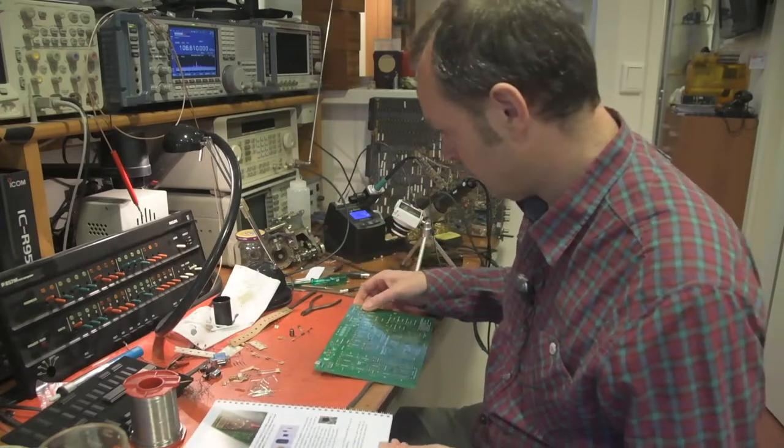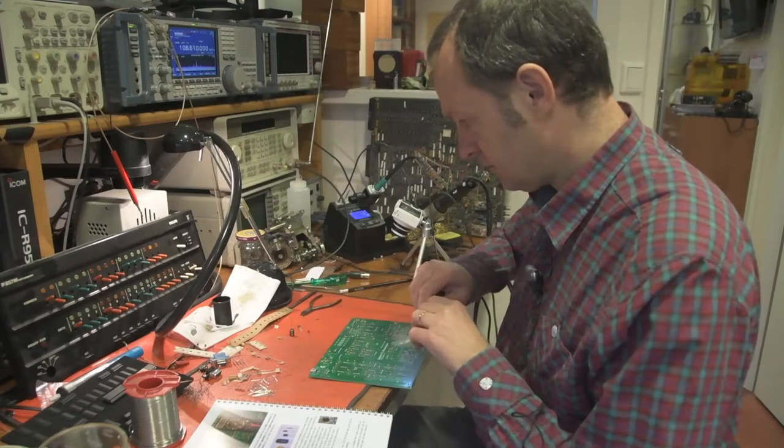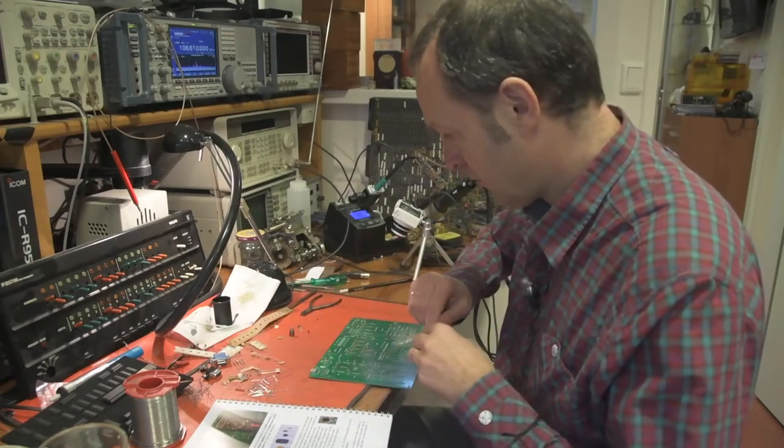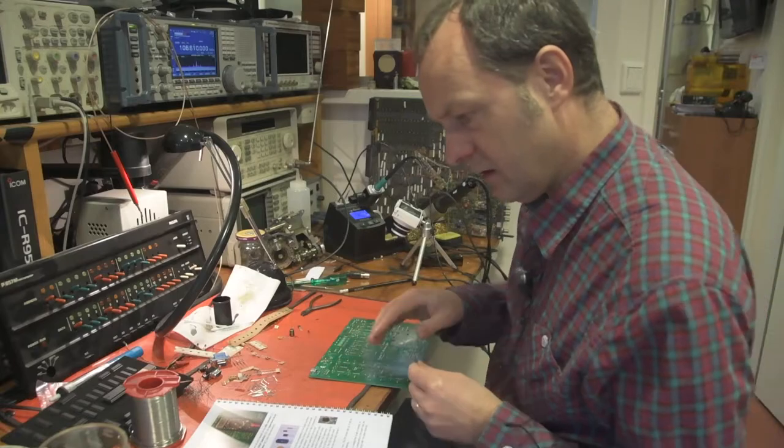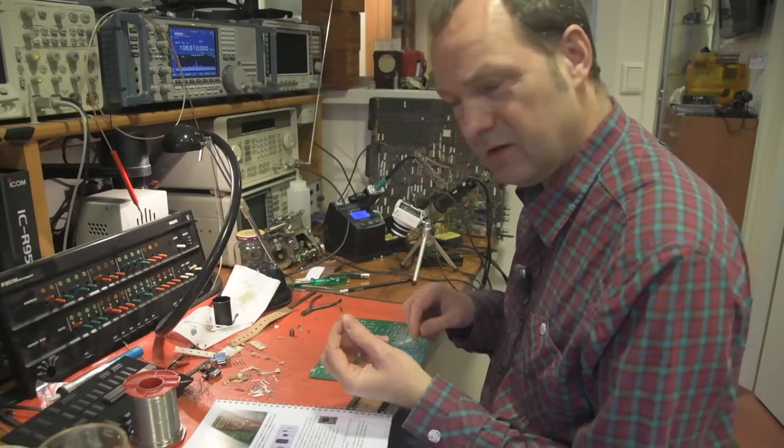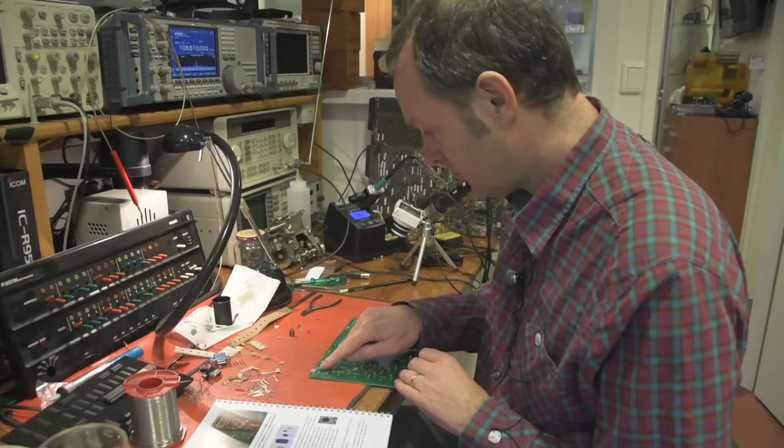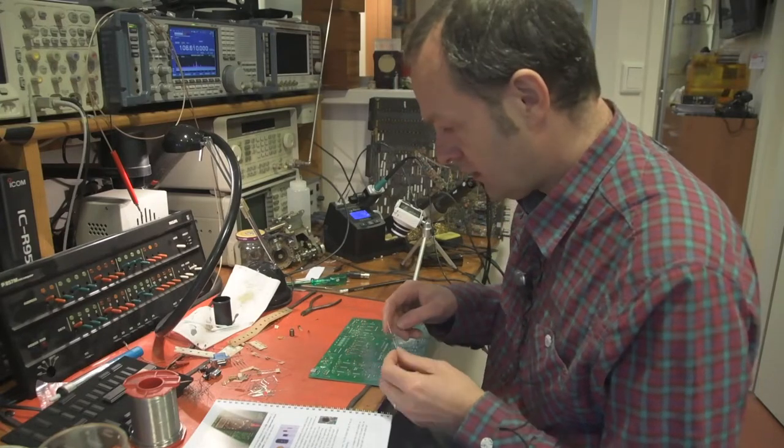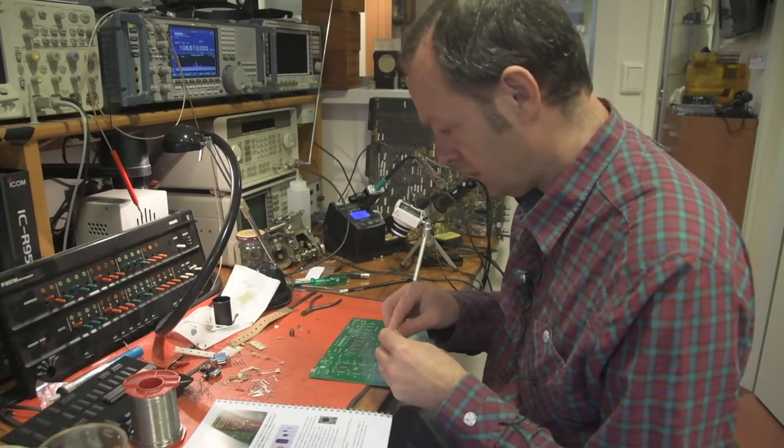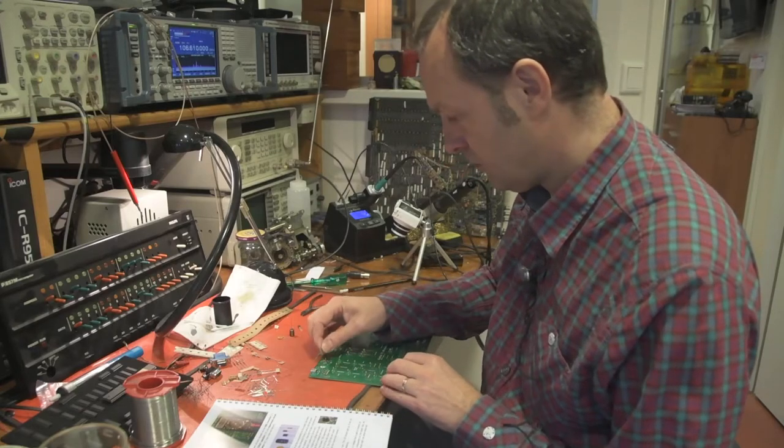Let's see what's next, the zener diode. And again, all the components are clearly marked here in the assembly manual. You'll see that this is D1, diode one. And we see a picture here of diode one. Now for diode one, that's the first component that really it matters which direction we put it on the board.